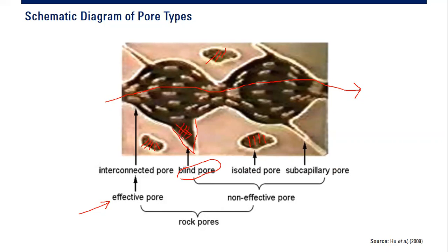Another type is the sub-capillary pore. Blind pores, isolated pores, and sub-capillary pores are all non-effective. Unfortunately, not only isolated pores but also blind pores and sub-capillary pores are non-effective. Effective pores plus all non-effective pores make up the total rock pores.